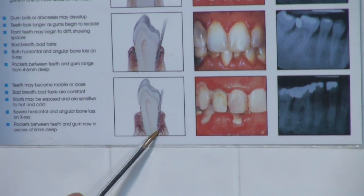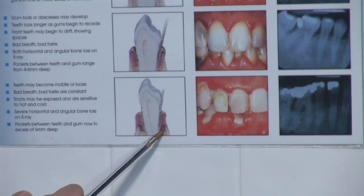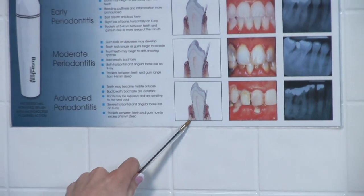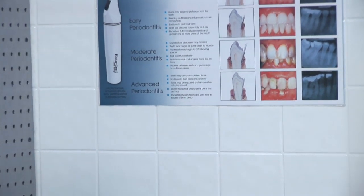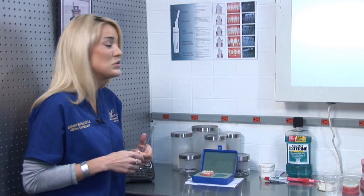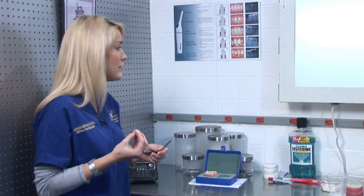When your dentist is measuring the pocketings around your gum, your measurements will become six millimeters or more. The pocketing can actually go all the way up to ten or even twelve millimeters. If you're getting those readings when your dentist is probing, that tooth is not going to last much longer — there's not enough bone to hold it in place.